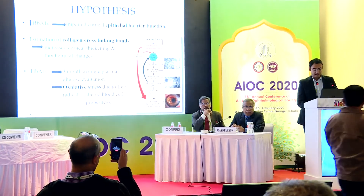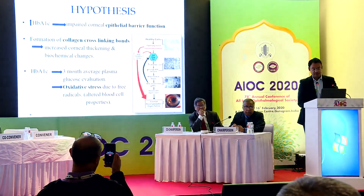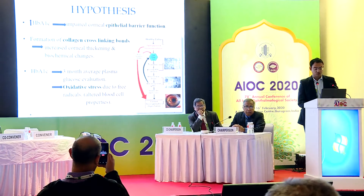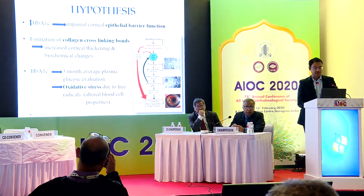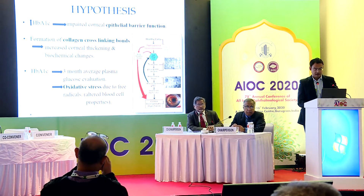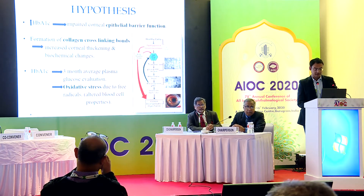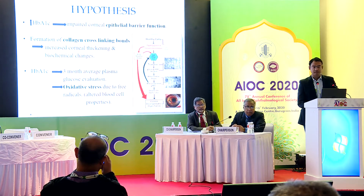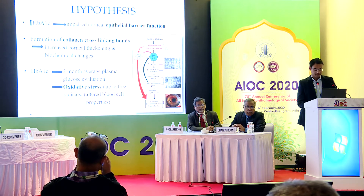According to the figure, we can see that if a healthy cell is subjected to hyperglycemia and insulin resistance, it leads to formation of reactive oxygen species. Because of certain reactions occurring, this leads to oxidative stress, which alters blood cell properties, and finally there occurs corneal decompensation and damage to the corneal cells.